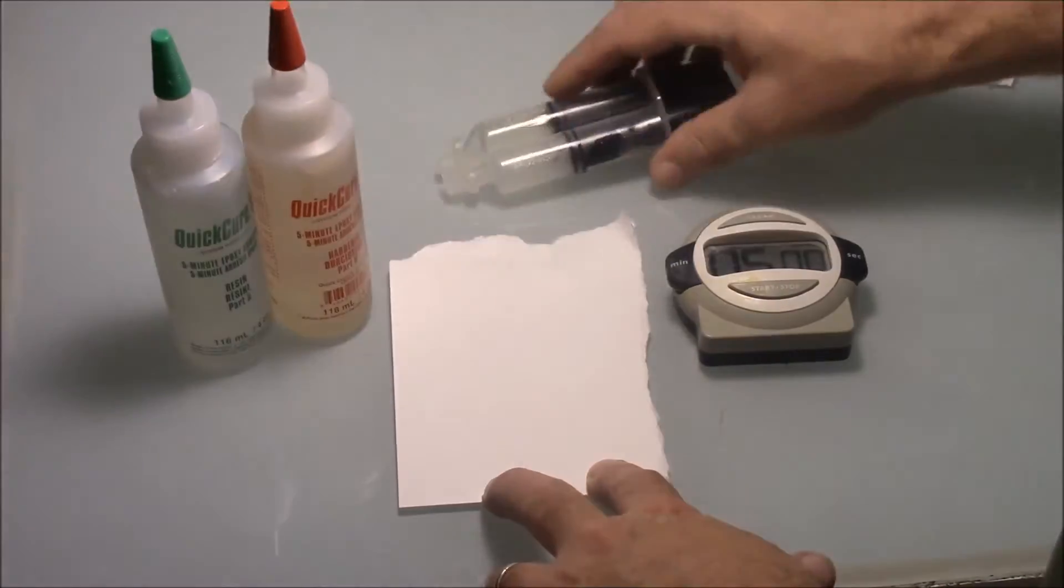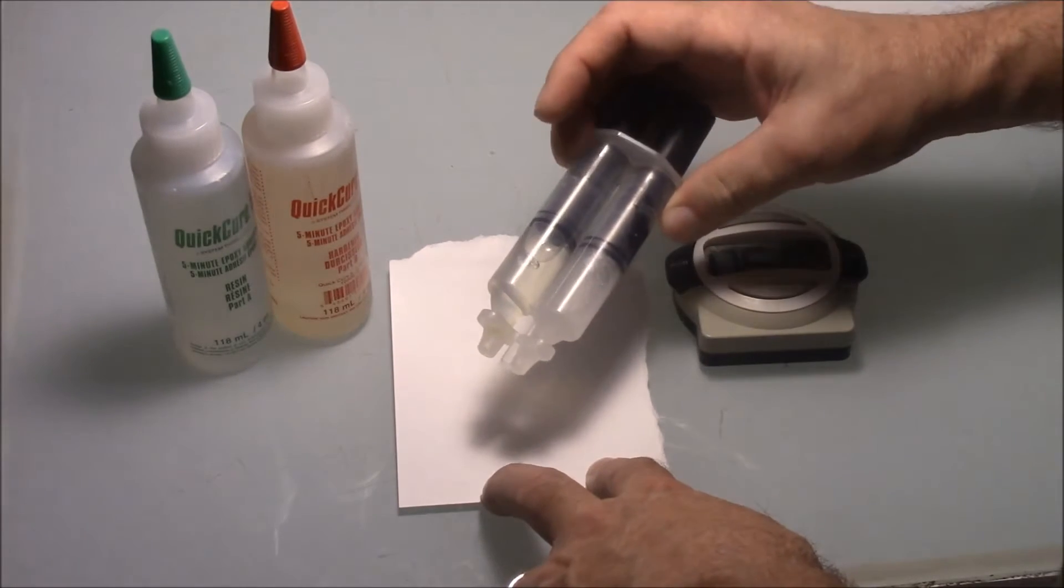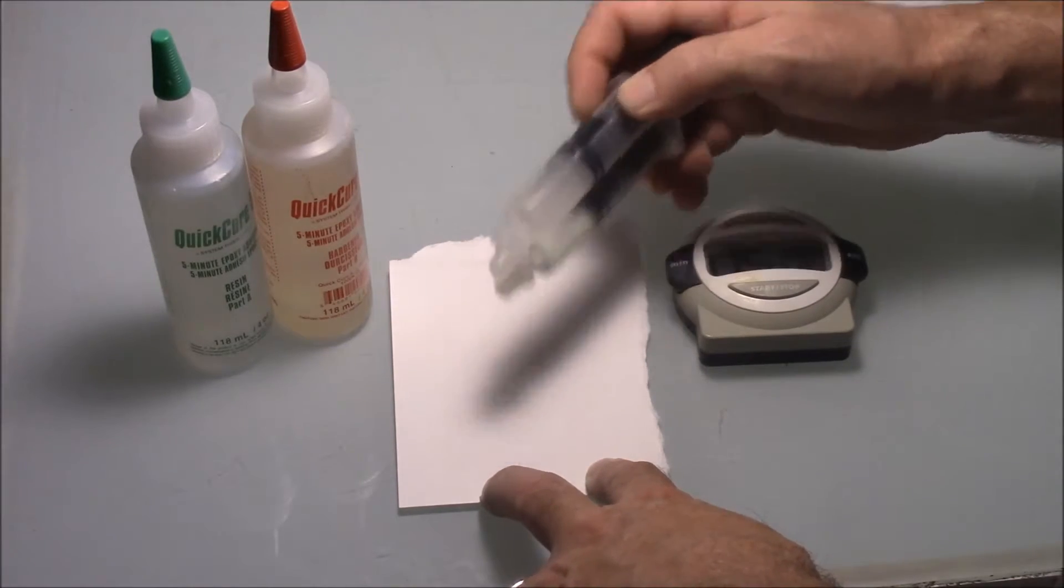You can buy these little tubes and if you get them fresh they're fine. If you get them like I did, I think I've had it on the shelf for three years, it's really thick and hard to get out of the tubes.